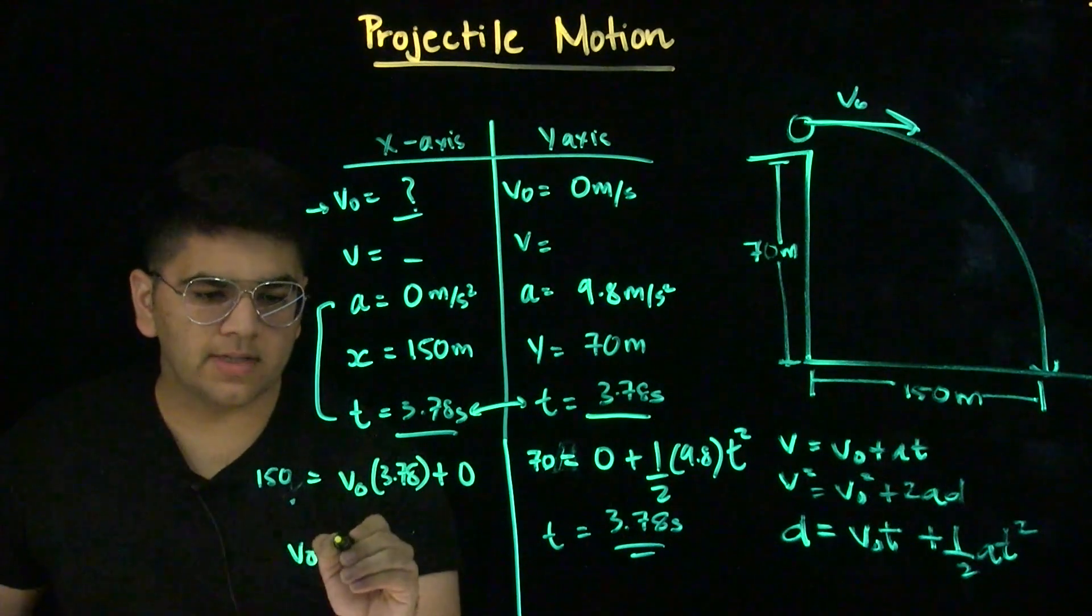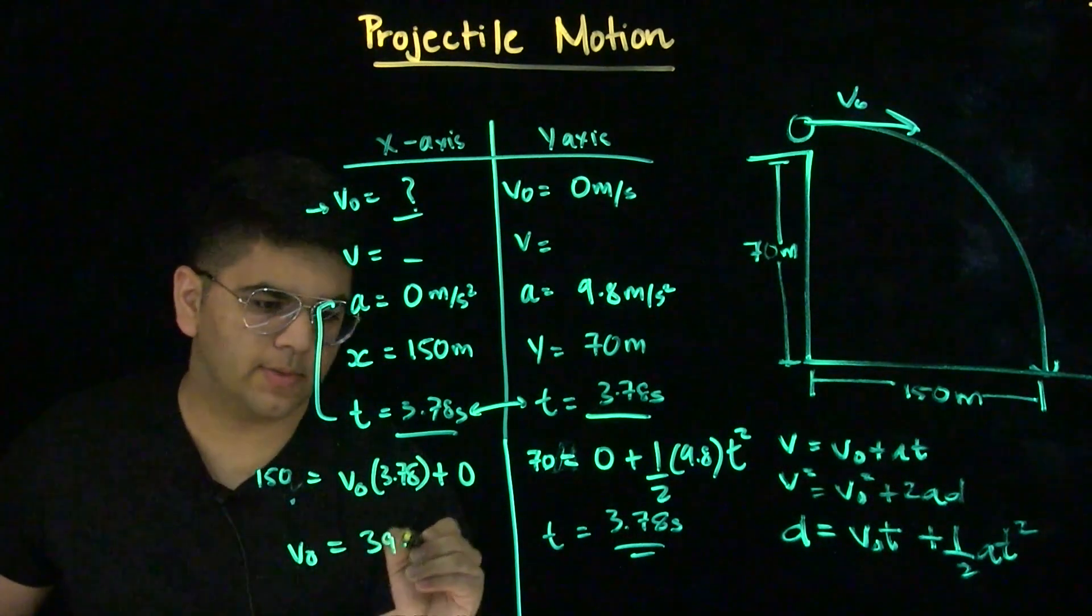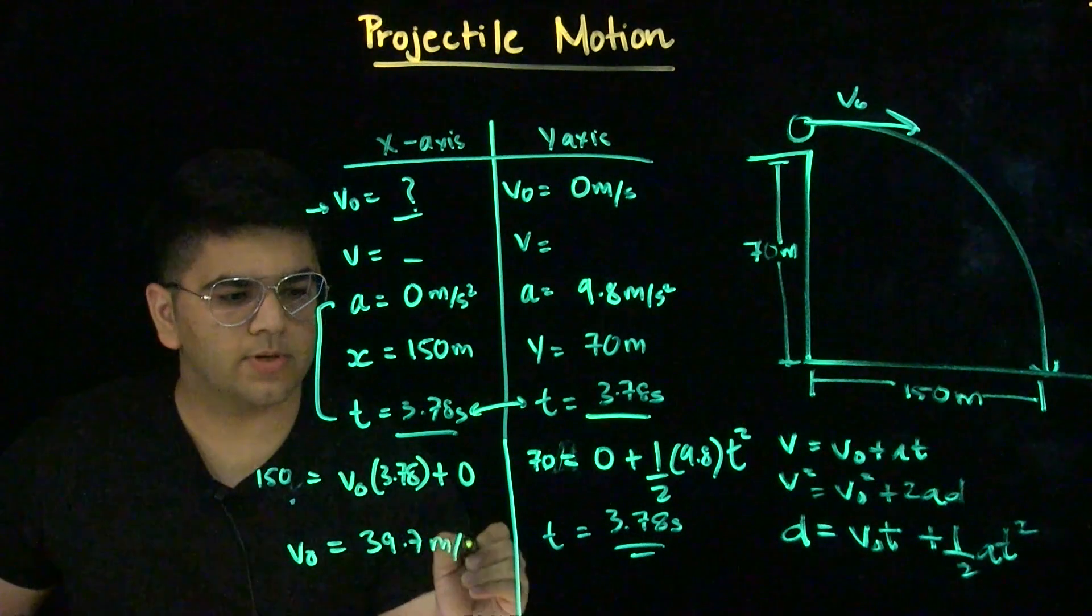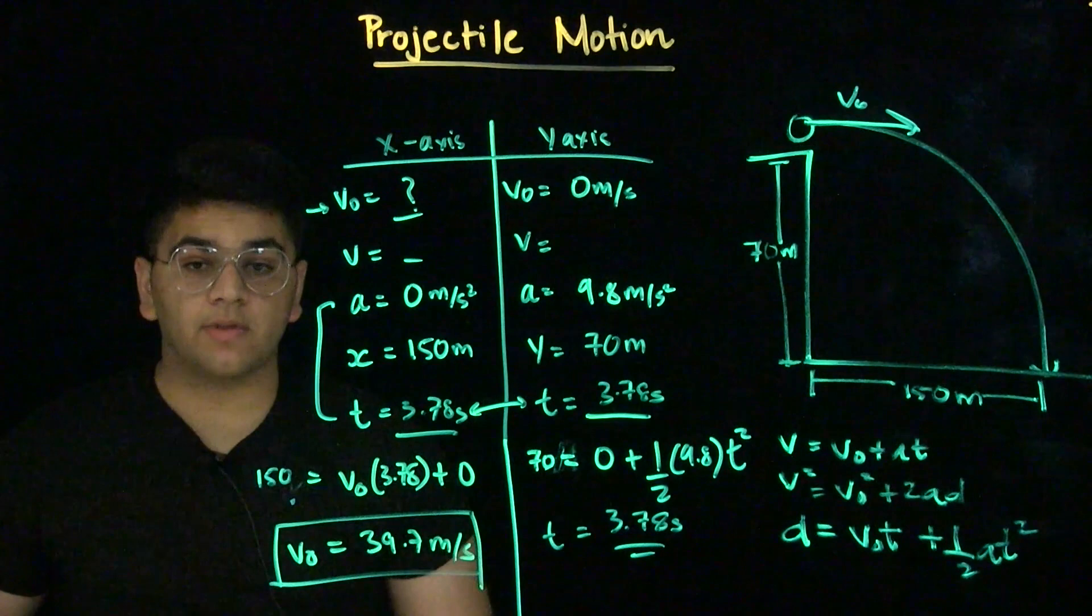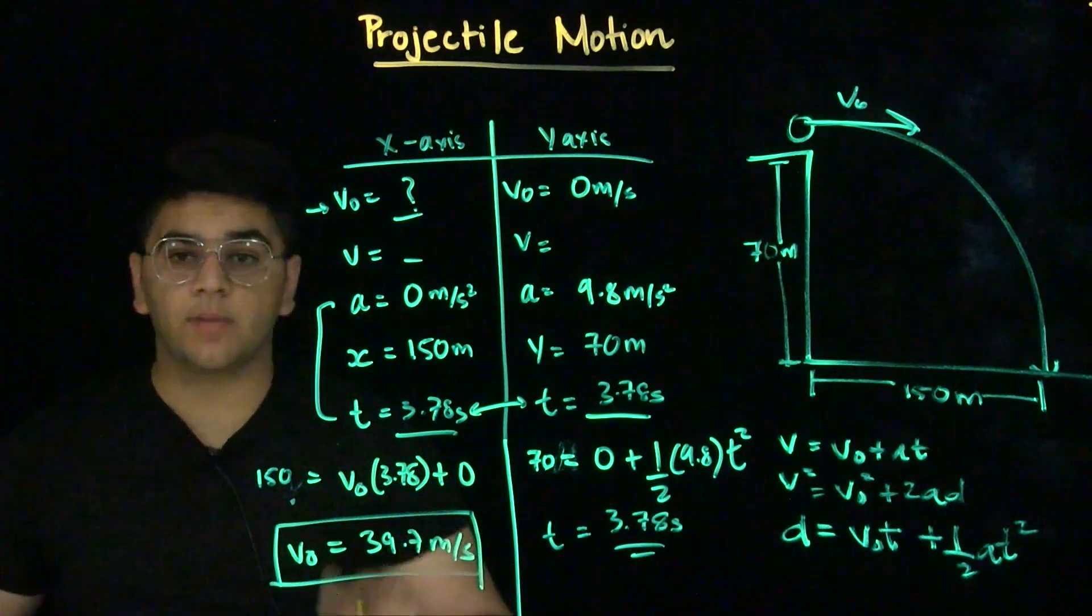And once we solve for velocity, we get 39.7 meters per second, which is what the horizontal velocity of the rock was when it was thrown off the top of the cliff.